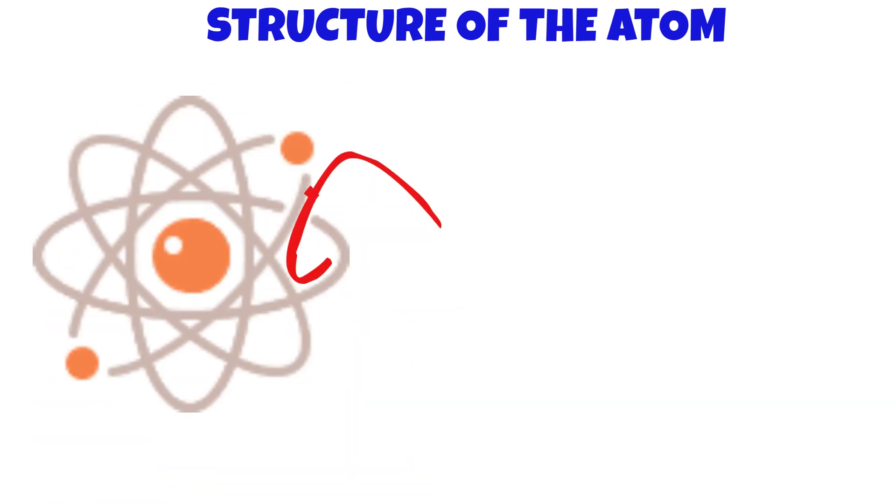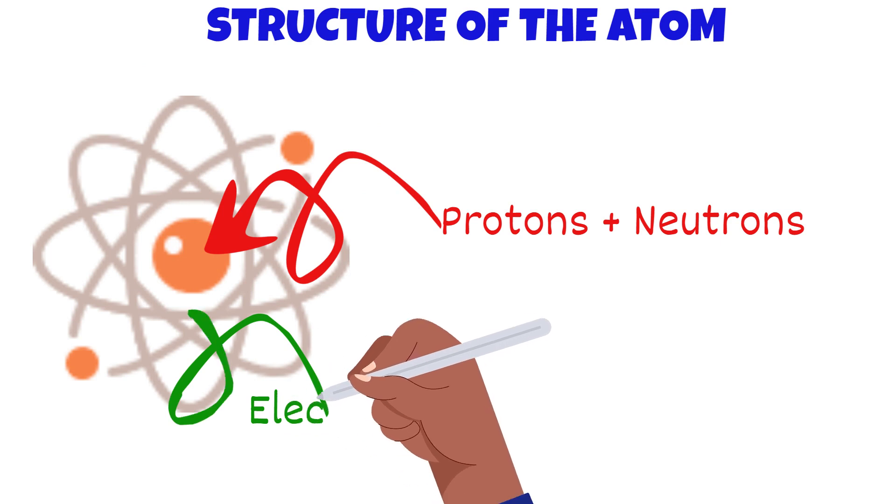So the structure of the atom. Here in the nucleus, the protons and neutrons are present while the electrons move around in the orbitals.